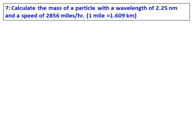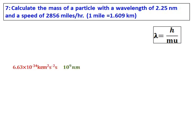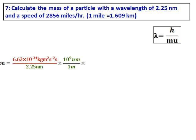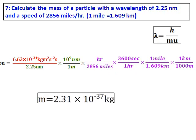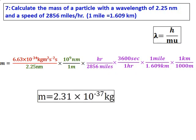Calculate the mass of a particle with a wavelength of 2.25 nanometers and a speed of 2856 miles per hour; the conversion between miles and kilometers is also given. Anytime the speed of light is not given but the velocity is something other than the speed of light, the equation you will use is lambda equals h over m v — the de Broglie wavelength. Substitute all the values: convert the wavelength into meters, convert hours to seconds, and miles to meters, then calculate the value of mass. The unit of mass will be kilograms.